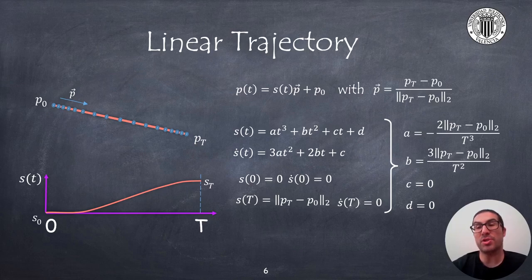From some boundary conditions such as the velocity at the beginning and the end of the trajectory must be 0, and that the overall distance to travel must be the distance between points p0 and pt.